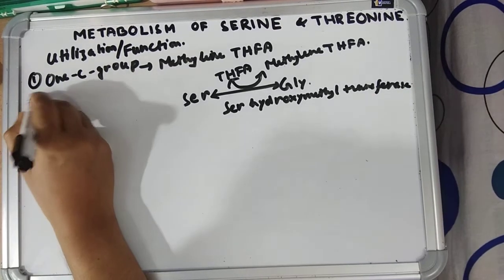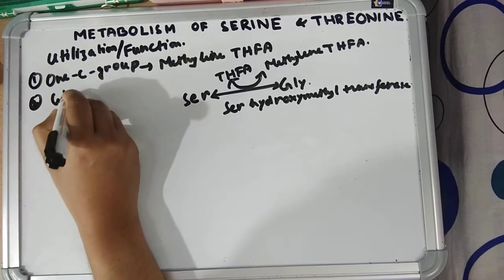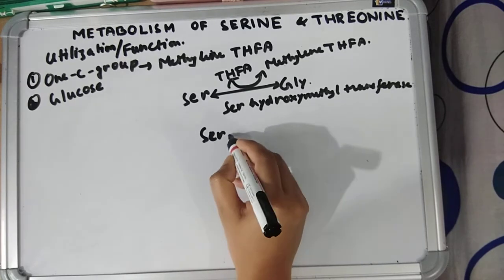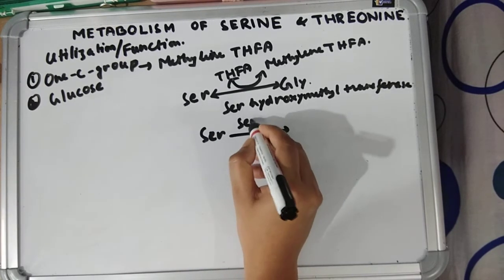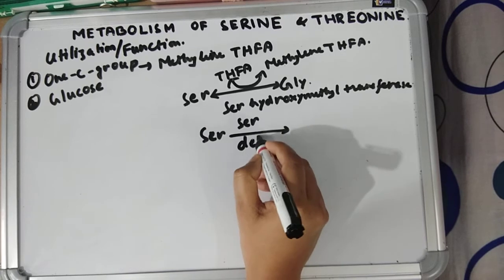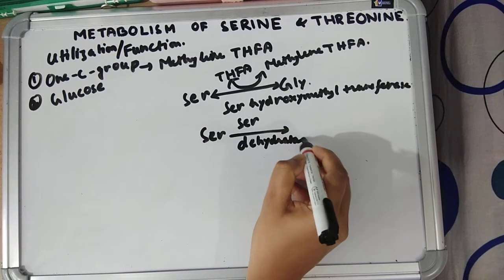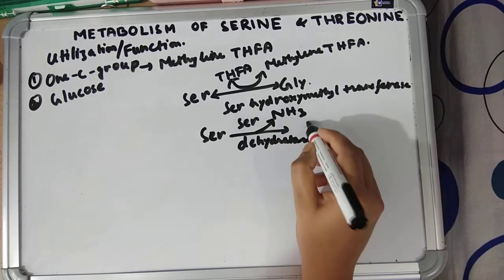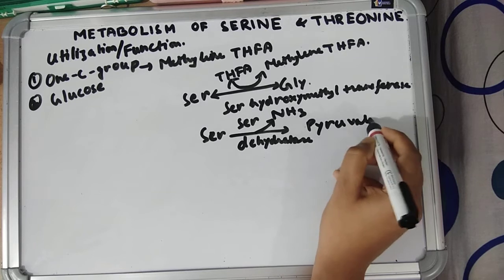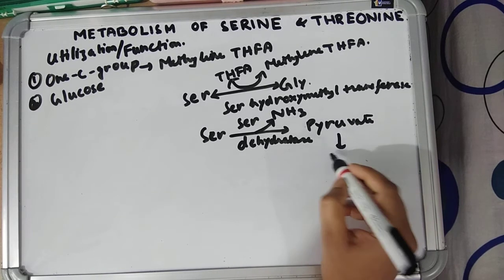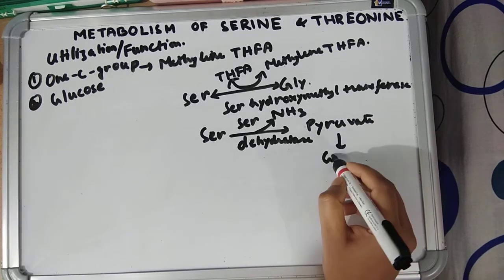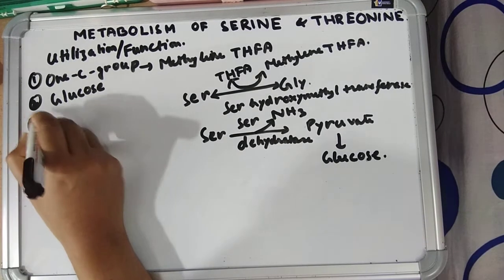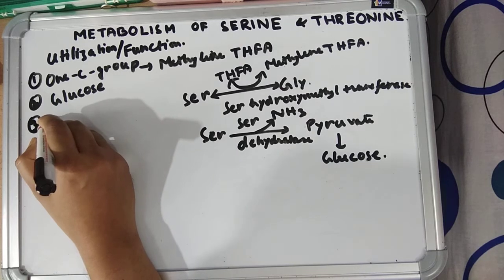Number two: serine forms glucose. Serine gets deaminated by serine dehydratase to form pyruvate. Pyruvate then enters gluconeogenesis to form glucose. Number three is alanine synthesis.